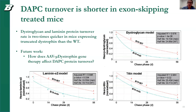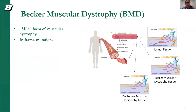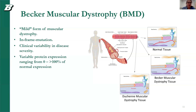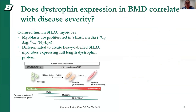Moving forward, we're going to look at Becker muscular dystrophy. This is a mild form of muscular dystrophy where patients have an in-frame mutation that allows them to produce a truncated dystrophin protein. There is high variability in disease severity as well as variable protein expression ranging from zero to over 100% of normal expression. So in order to understand this disease more in-depth, we need to develop a sensitive method for quantifying dystrophin protein over a large dynamic range. Our main question is: does dystrophin expression in BMD correlate with disease severity?